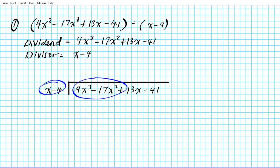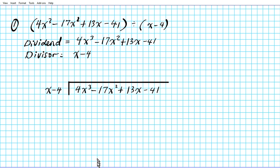We ask ourselves how many times this binomial goes into the first pair of terms in our dividend polynomial. Keep in mind when setting up your dividend, you want to make sure there are no missing degree terms. Descending from the highest degree down to the zero degree, you must not skip any degree. If a term is missing, insert a placeholder with zero as the coefficient times x to the power of the missing degree. Here we have degrees three, two, one, zero — so all terms are accounted for.